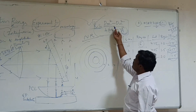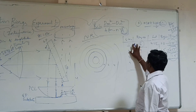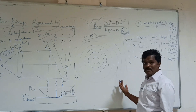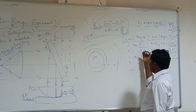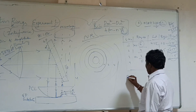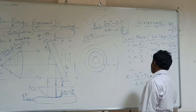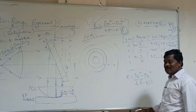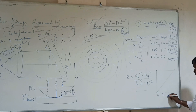For example, if I want to find the radius of curvature, I can take M equal to 6 and N equal to 2. So R is equal to D6 squared minus D4 squared, divided by 4 into (6 minus 4) into lambda. Also, you need to plot a graph with 0, 2, 4, 6, 8, 10 on the axes.